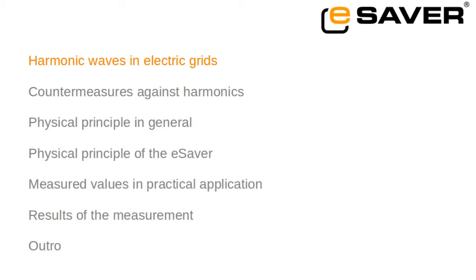Part 1: Harmonic waves in electric grids. Electrical energy is commonly generated in power plants, then transported via transmission lines and delivered to a large number of electricity consumers.